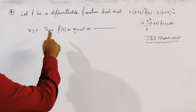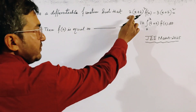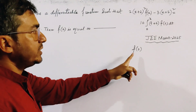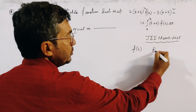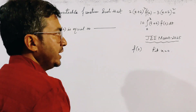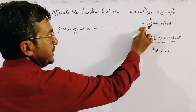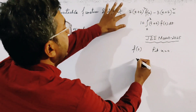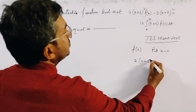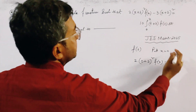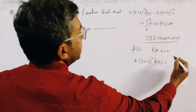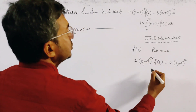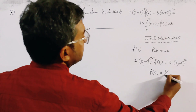To find f(2), we first find the value of f(0). It is easy to find f(0) from this relation by putting x = 0. If we put x = 0, the integral becomes 0 because the integral from 0 to 0 is 0. So we get 2·(0+2)²·f(0) = 3·(0+2)², and the (0+2)² terms cancel, giving f(0) = 3/2.